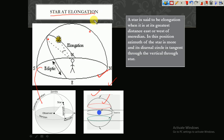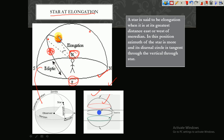Star at elongation means the star is said to be at elongation when it is at its greatest distance either from the east or west. As you can see here, the star's position is at the greater distance from the east. In that case, this condition is called eastern elongation.